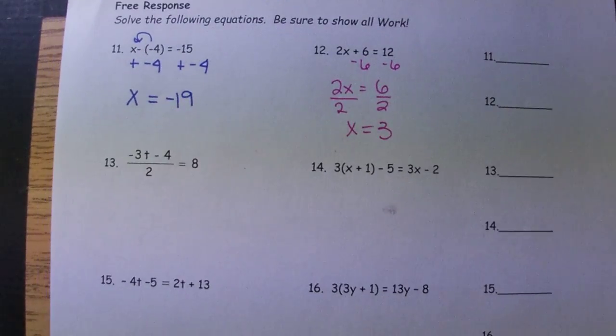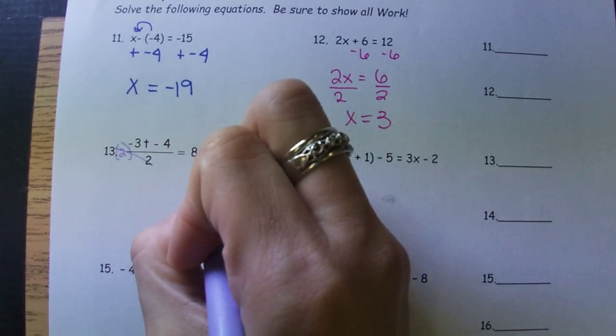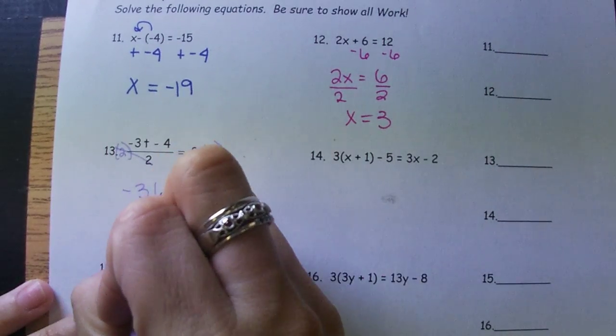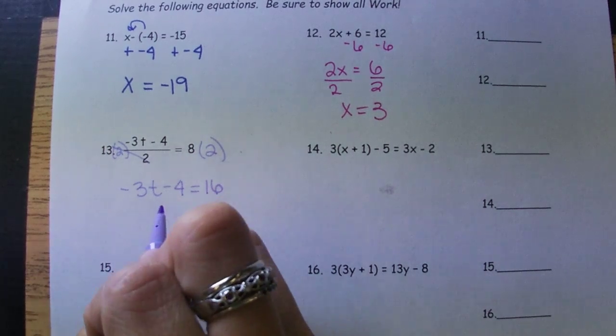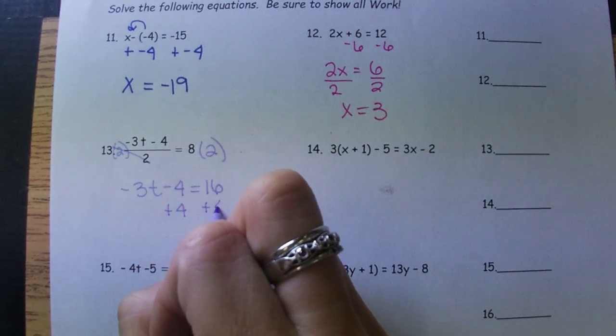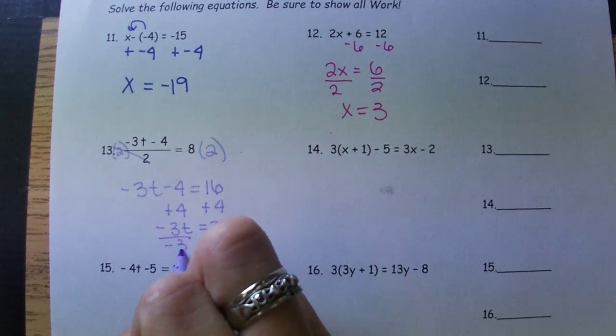Number 13, we have that long fraction bar. So to get rid of that large fraction, we're going to multiply first. Then we'll undo subtraction with addition. We'll divide by negative 3.